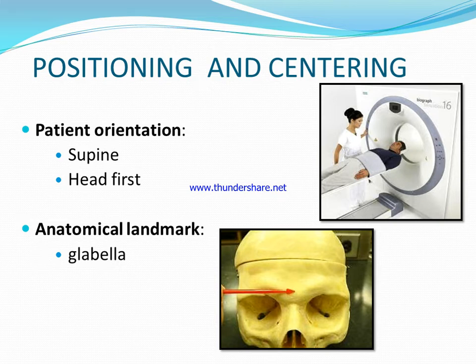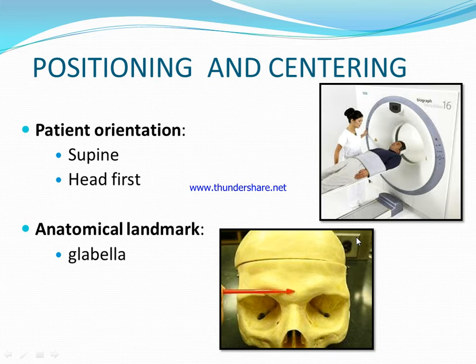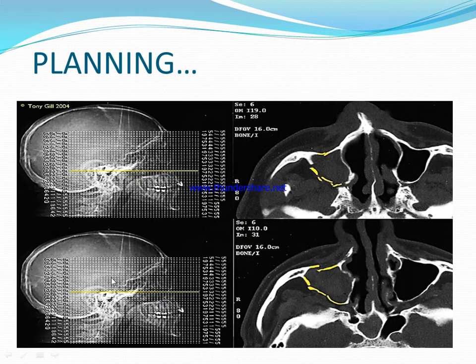For patient positioning and centering: the patient should be in the supine and head-first position. For centering, the landmark used is the glabella. This is the planning topography made for HRCT temporal bone, where we select only the relevant region.